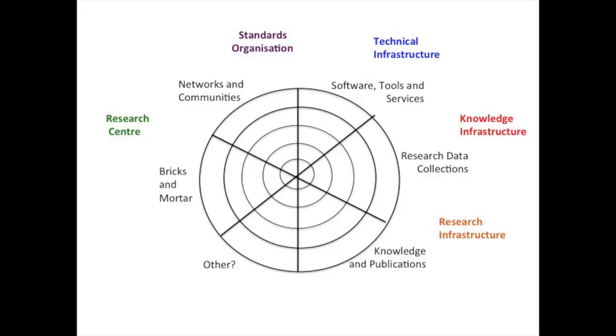These are all important elements that come together to support the research process. Depending on how many of the concentric circles you fill in each quadrant — in other words, how strong a development is in each area — you might have different kinds of infrastructure. If very strong on bricks-and-mortar and communities, you may have something more like a research center. If strong on networks and also on tools and services, it starts to sound more like a standards organization like ISO. If really technically driven by tools, software, and services, that's more of a technical infrastructure. You'll also have knowledge infrastructures very strong on research data — the digital iterations of libraries and archives. And the most comprehensive would push out knowledge and publication, making it more of a communication research infrastructure.